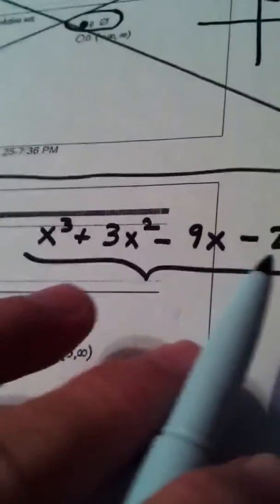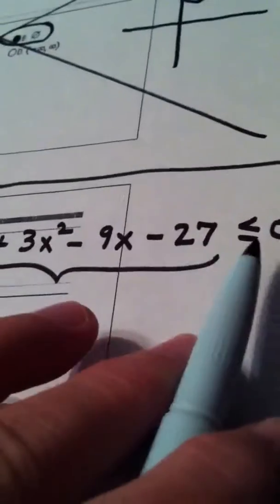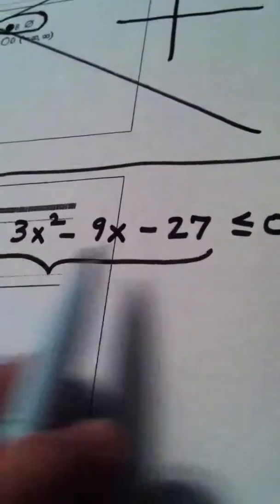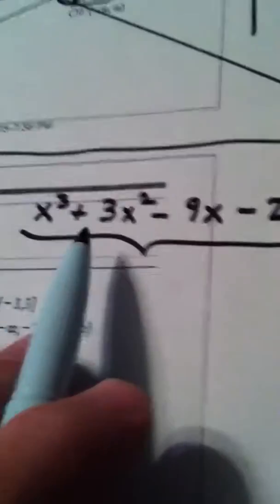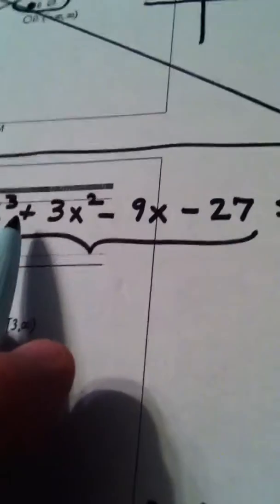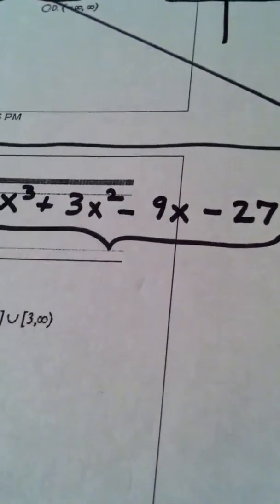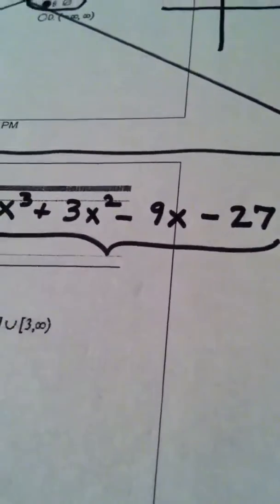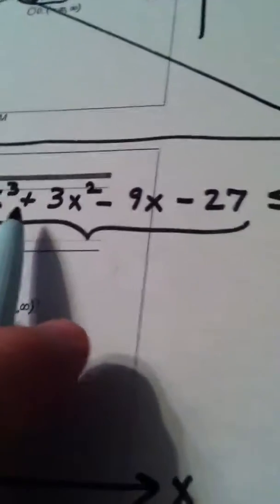The first thing I did is I subtracted 27 from both sides because if we're going to solve this graphically like we have any other higher order inequality, higher order meaning quadratic, cubic, any inequality with degree 2 or higher,